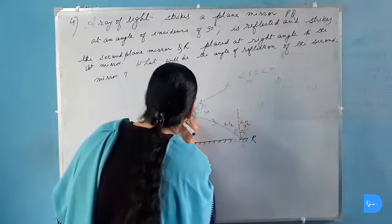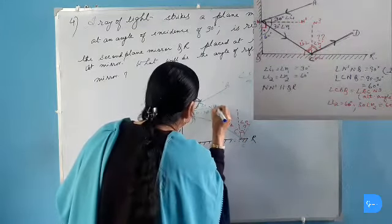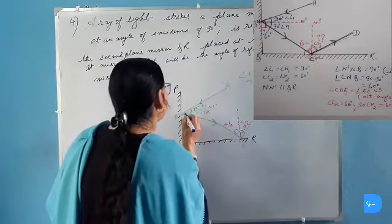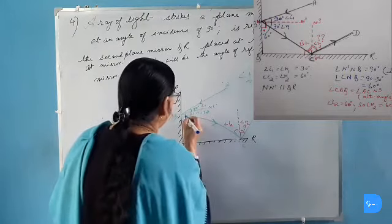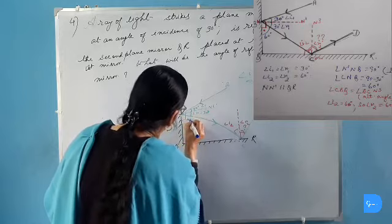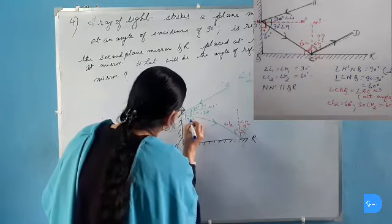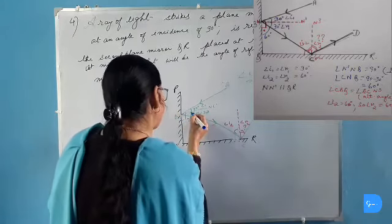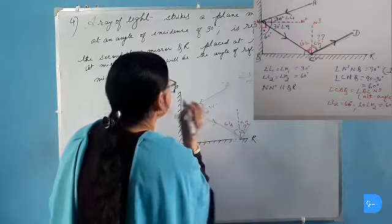Now we have drawn a normal NN1 and normal makes an angle of 90 degrees with the surface of the plane mirror. So the angle of normal with the plane mirror will be 90 degrees and this angle is 30 degrees. Angle of reflection here is 30 degrees.